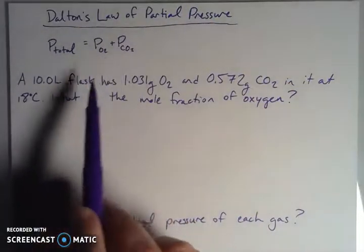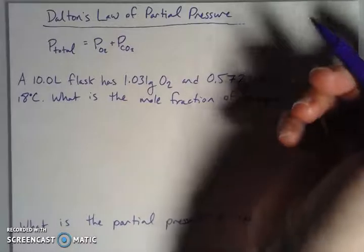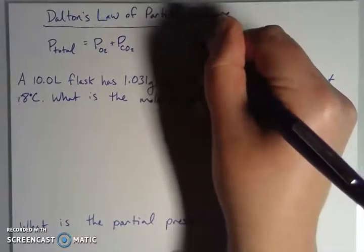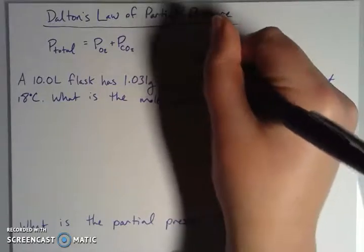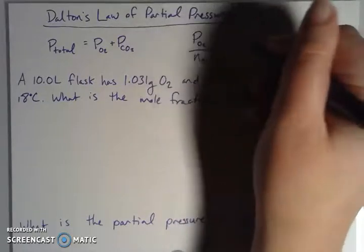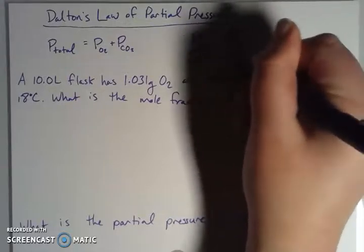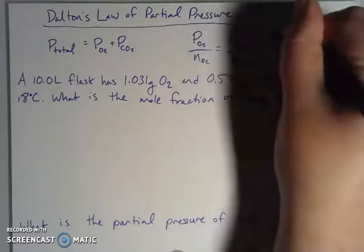And notation-wise, this is the way that we'd write it out. So it's a capital P for pressure with the sub of whatever the identity is of the gas you're talking about. And the other thing that shakes out of this is this relationship between the number of moles and that pressure. There's a direct relationship between the partial pressure of oxygen and the number of moles of oxygen, and that's directly proportional to the partial pressure from the carbon dioxide and the number of moles of carbon dioxide, which is directly proportional to the total.